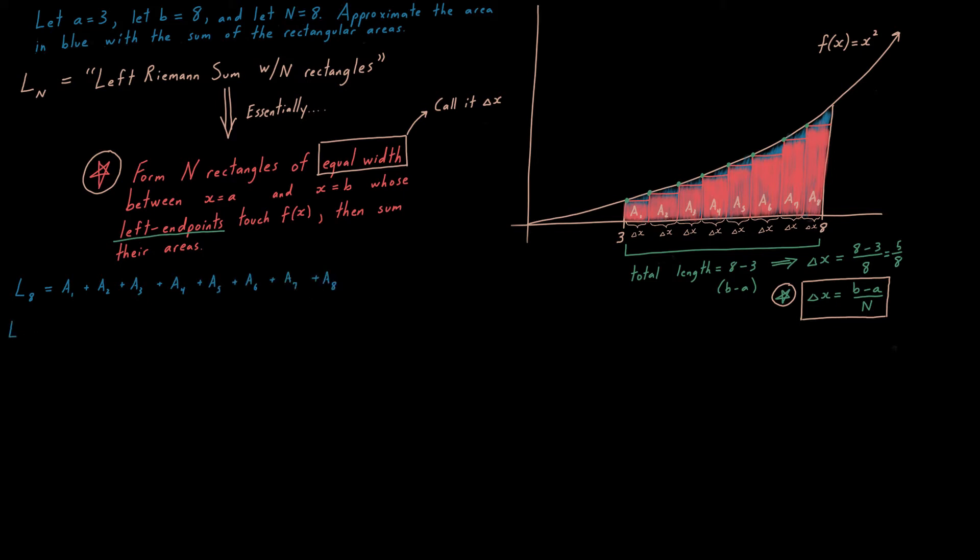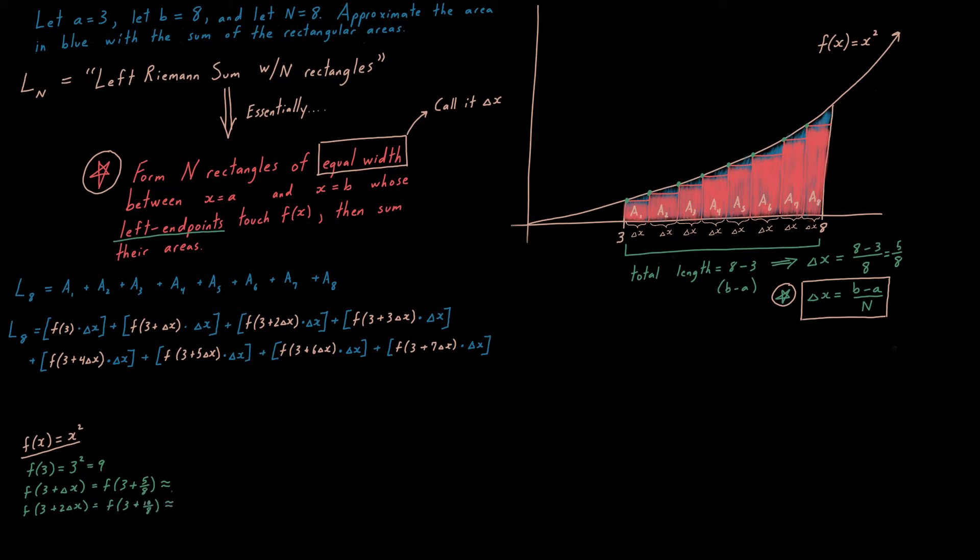So, the left Riemann sum is just a1, adding all the way up to a8. And here in white are my heights. The first height is f of 3. The second height is f of 3 plus delta x. That's the second x coordinate. f of 3 plus 2 delta x is the third x coordinate. You can count these on the picture. f of 3 plus 3 delta x's, my fourth x coordinate, 3 plus 4 delta x, my fifth x coordinate, and so on and so forth, all the way to my final x coordinate of 3 plus 7 delta x. So, f of 3 plus 7 delta x is my final height.